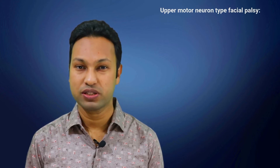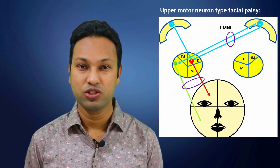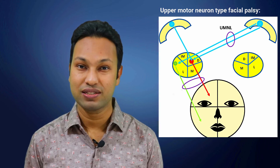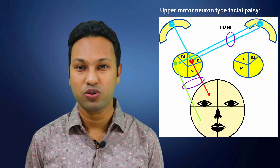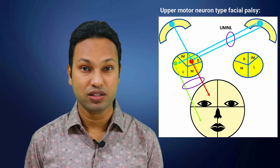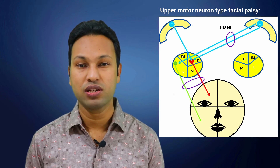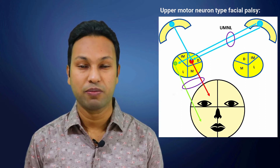When fibers coming from the precentral gyrus to the motor nucleus of the facial nerve are affected, this is called upper motor neuron type of facial palsy. When upper motor neuron lesion occurs on one side, the contralateral supranucleus and infranucleus should be affected. However, the supranucleus gets additional supply from the ipsilateral precentral gyrus, so the supranucleus is not affected. Only the infranucleus of the opposite side is affected.